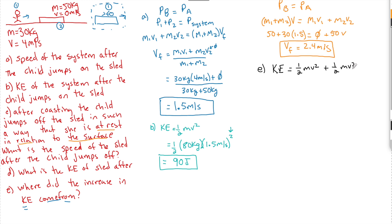So we have 1/2, 50 times 2.4 squared, don't forget the squared, plus zero. Because once again, they are at rest. So if they don't have any momentum, she does not have any kinetic energy as well. We see, wow, this thing jumped up to 144 joules of energy. So there was an increase.